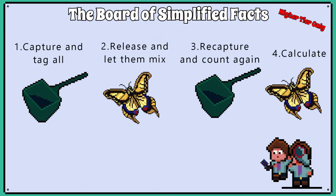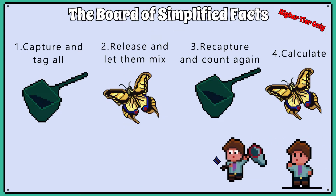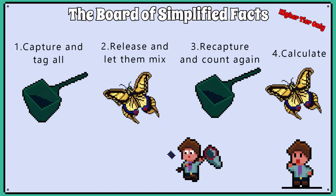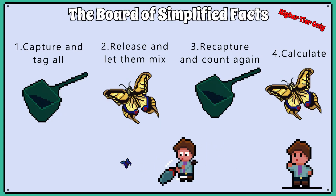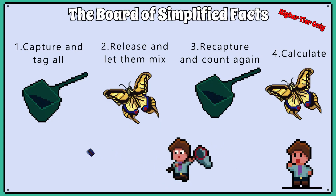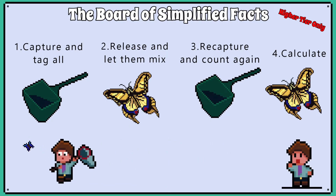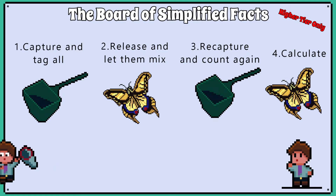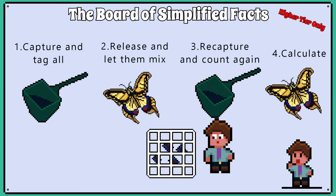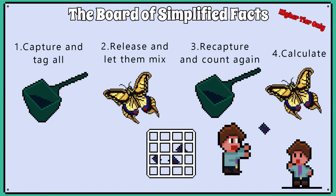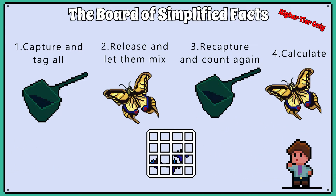Capture-recapture is a method for estimating the size of a population when the organism wouldn't be easy to count in a quadrat because, for example, they move too much.